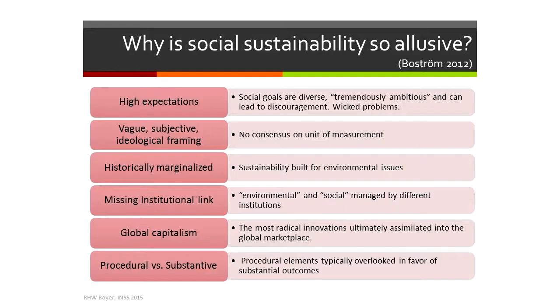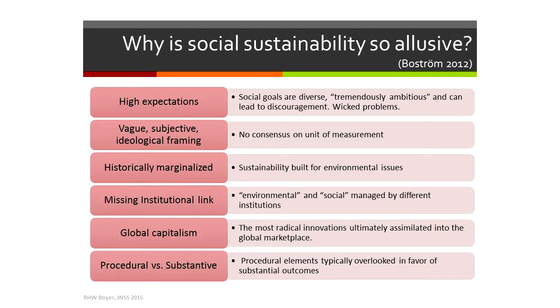So let's jump into this. Why is this concept of social sustainability so elusive? If you read articles about social sustainability, sometimes the concept is referred to as chaotic. It is definitely underrepresented in the academic literature. I did a quick Google n-gram — which scans all the books in the Google Books Library for how often different words are used — and of the three pillars, social sustainability is used the least.